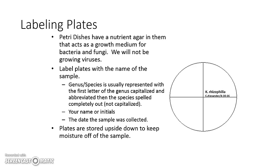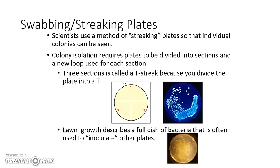Very important — if you get asked this on a quiz or test: when you're done, flip the plate upside down and put a couple pieces of tape so the lid doesn't come off. Flip it upside down to ensure that all condensation or water droplets don't go into your sample — they drip to the lid instead. Here's an image showing how we swab or streak plates. Depending on what you're trying to look at, you might do a lawn growth or a T-streak. You're going to do lawn growths this year.